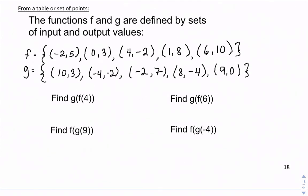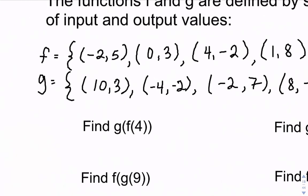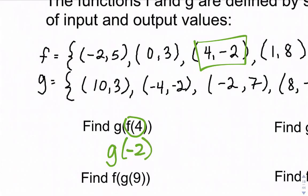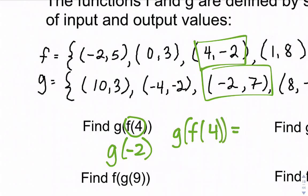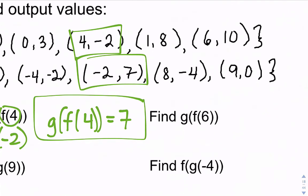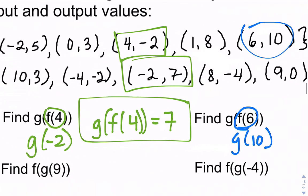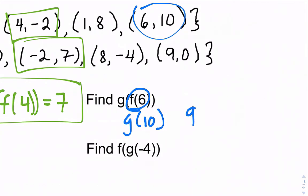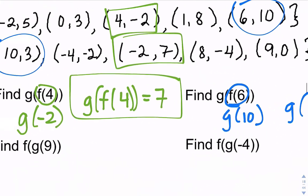A composition can also be done from a table or set of points. The functions f and g are defined by input and output values. Find g of f of 4: start with f of 4 — when the input is 4, the output for f is negative 2. Now find g of negative 2, which is 7. So g of f of 4 equals 7. Find g of f of 6: f of 6 is 10, and g of 10 is 3. So g of f of 6 equals 3.